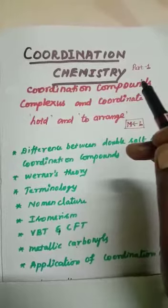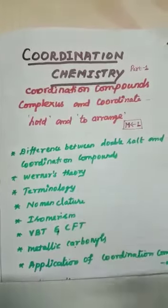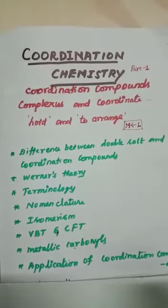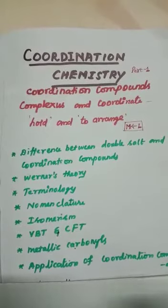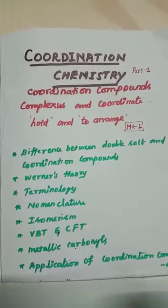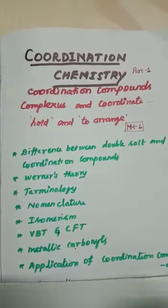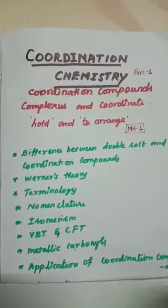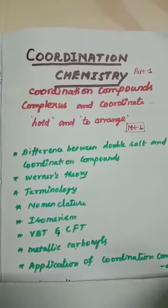D-block elements have the tendency to form complex compounds. These complex compounds differ in their properties from simple ionic and covalent compounds.